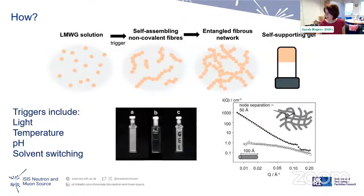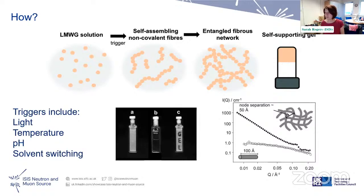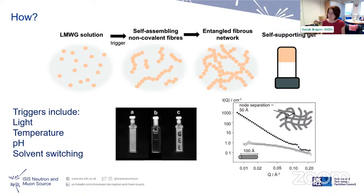You take a solution of those molecules, apply a trigger — light, temperature, pH, or solvent switching — which causes self-assembly of non-covalent fibers that eventually form an entangled fibrous network and a supporting gel. In one light-triggered example, we made a mask with the word 'gel' on it, shone light through it, and you can clearly see where the gel formed and where it didn't.